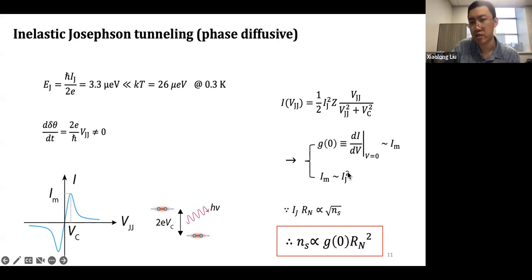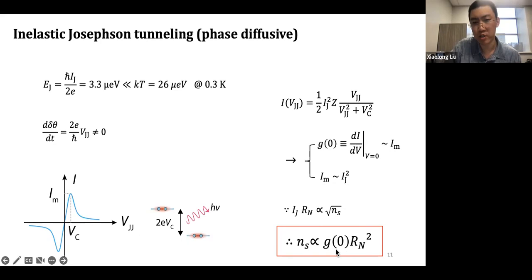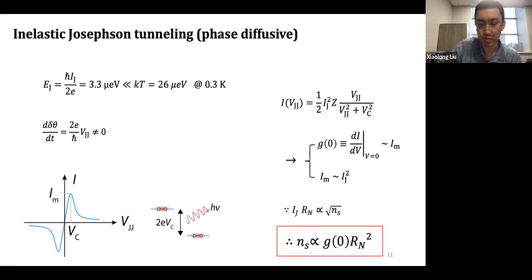I_m is proportional to the intrinsic critical current I_J squared. From the Ambegaokar-Baratoff result, I_J · R_N is proportional to the square root of n_s, so we can rewrite the superfluid density as n_s = G₀ · R_N², where G₀ is just the zero-bias differential conductance — which we measure all the time in STM — and R_N is the junction resistance measurable at a relatively high voltage beyond the superconductivity gap. So those two quantities are readily measurable, giving us a way to measure the superfluid density.